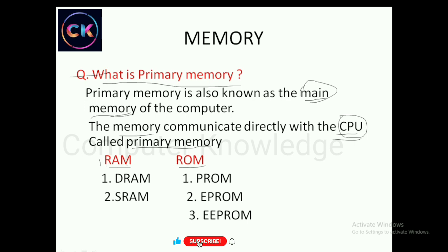Random Access Memory is the main part of primary memory. The first type is Dynamic Random Access Memory (DRAM). The next one is Static Random Access Memory (SRAM).